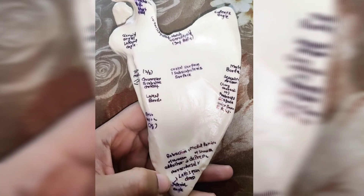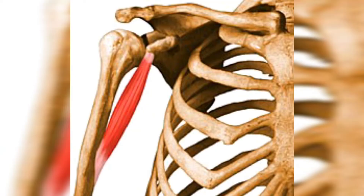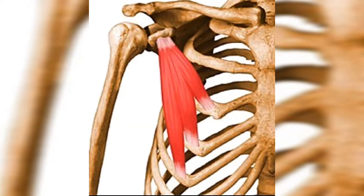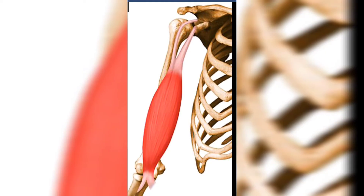As you can see here, coracobrachialis flexes and adducts the arm. You can see the muscle fibers. Pectoralis minor stabilizes the scapula by drawing it inferiorly and anteriorly against the thoracic wall. Biceps brachii supinates the forearm, and when it is supinated, it flexes the forearm.